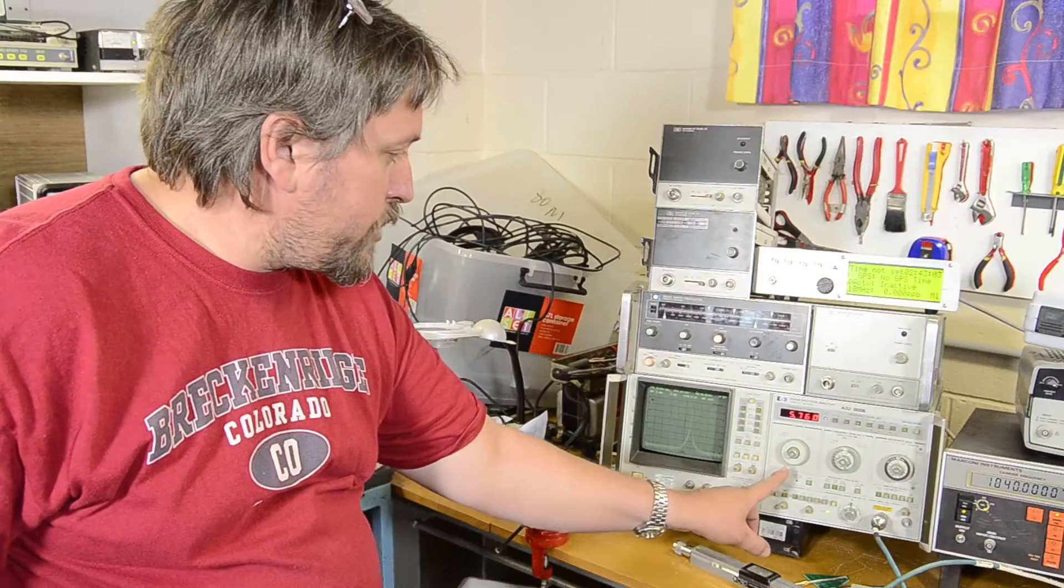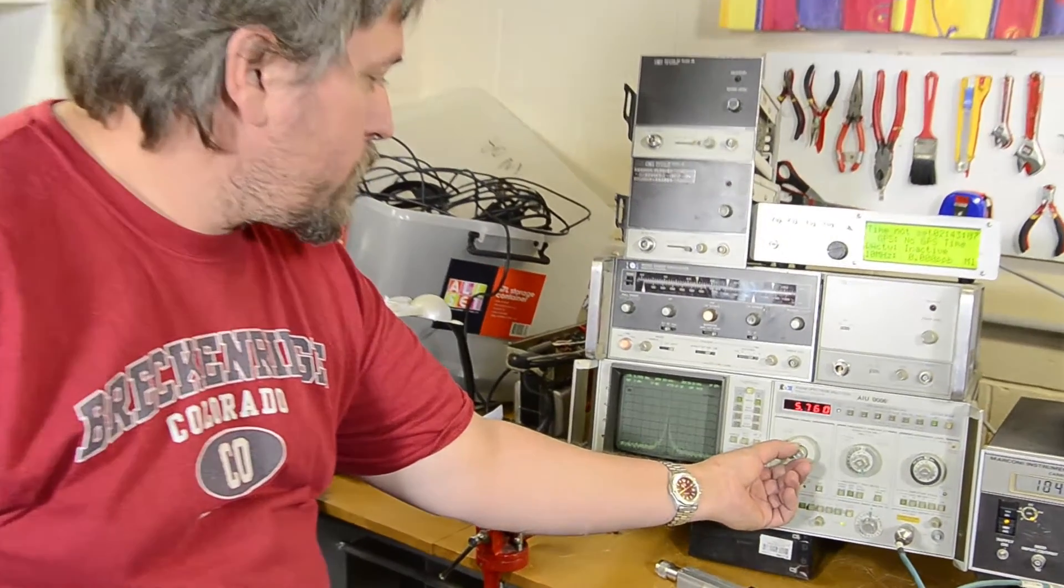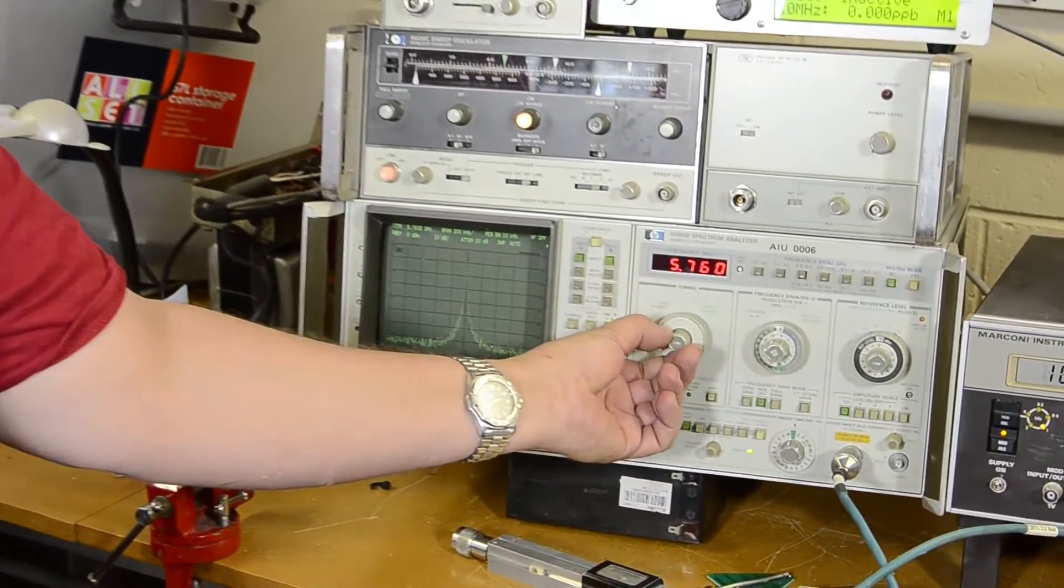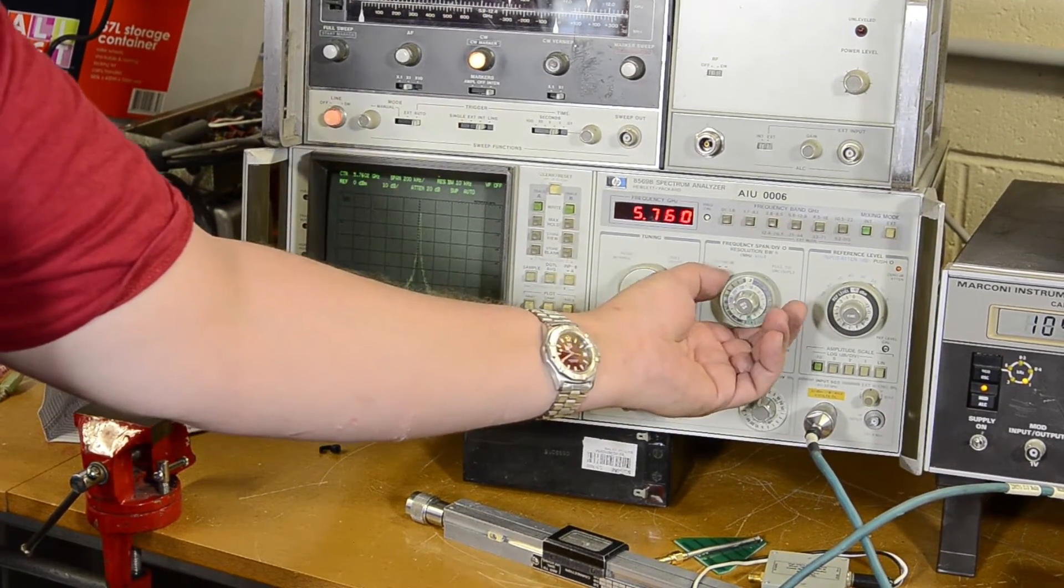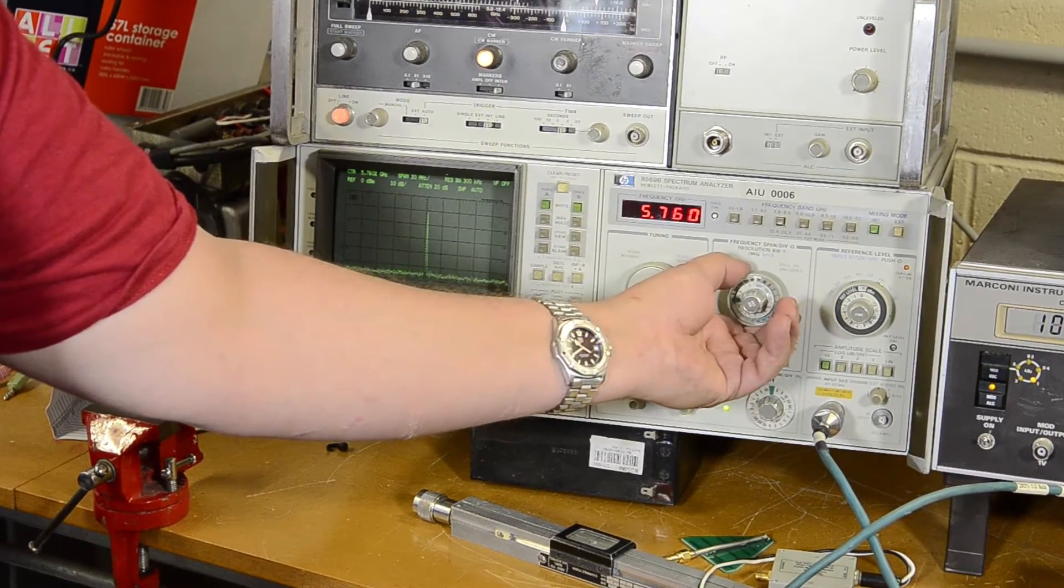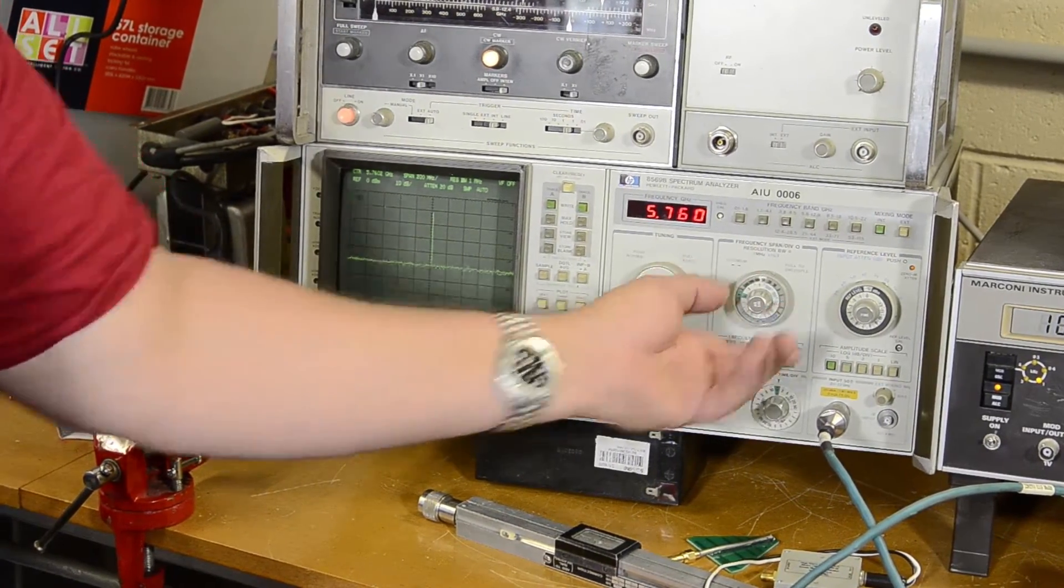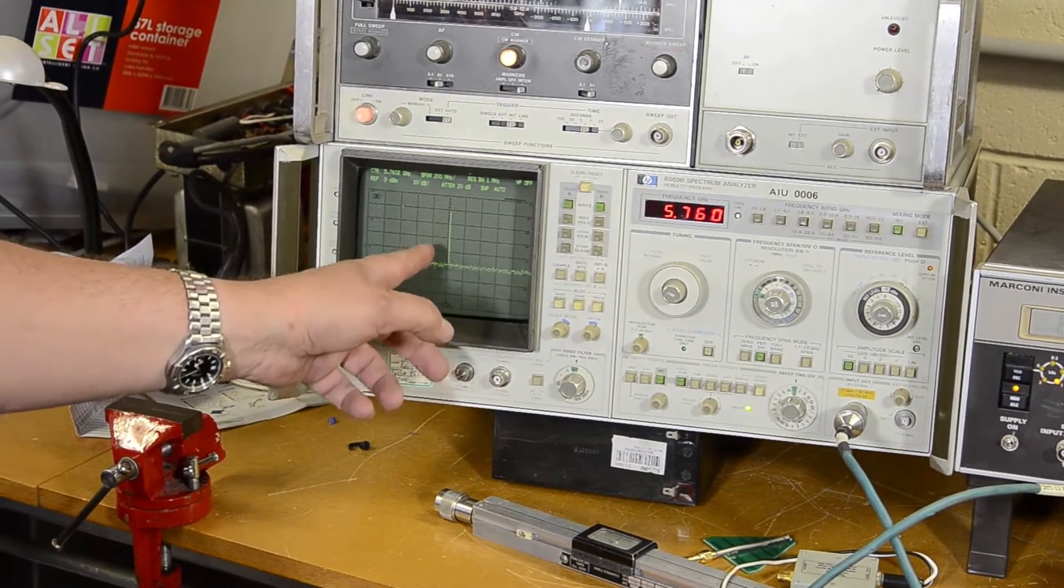So starting from left, the controls are the tuning control. That moves the display left to right, much like the time base on a CRO. This is the bandwidth control, so I can go in and have a look at all the spectrum. That's 50 megahertz from here to here, and obviously that's quite a small slice.